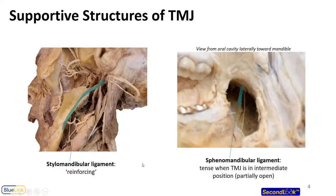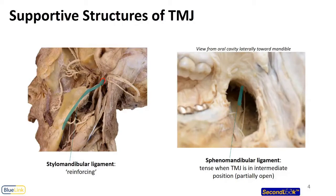The next two structures are the extrinsic ligaments. The first is the stylomandibular ligament, which is actually an extension from the fibrous capsule of the parotid gland. It attaches to the styloid process superiorly and inferiorly along the ramus and the angle of the mandible. Its orientation means it does not have too much influence on how the joint functions, but it does serve to connect the cranium to the mandible.